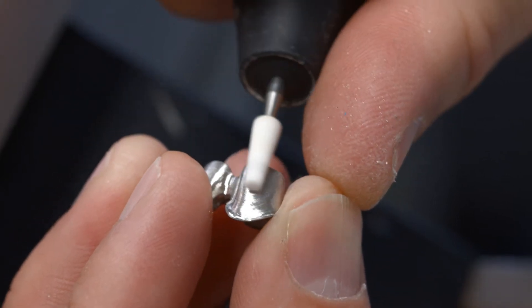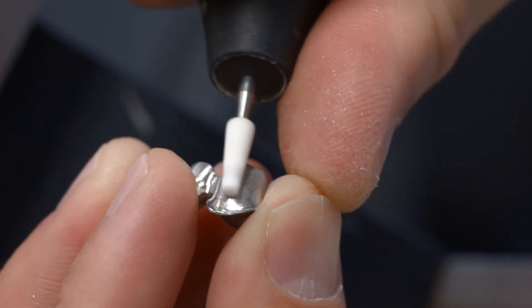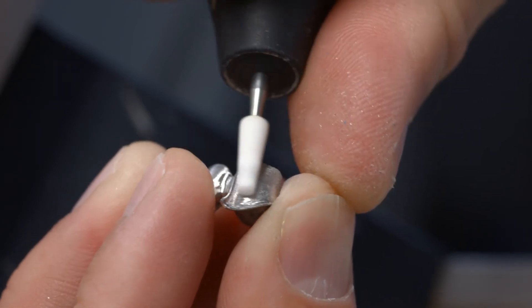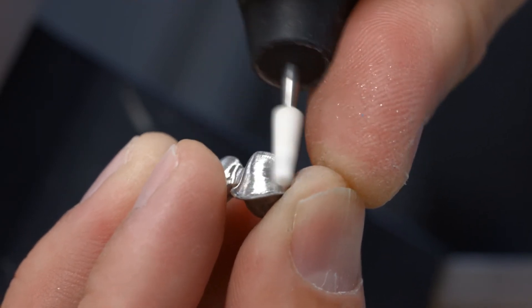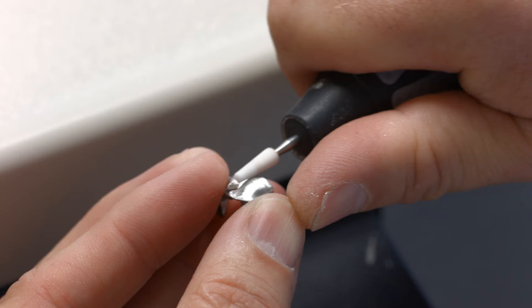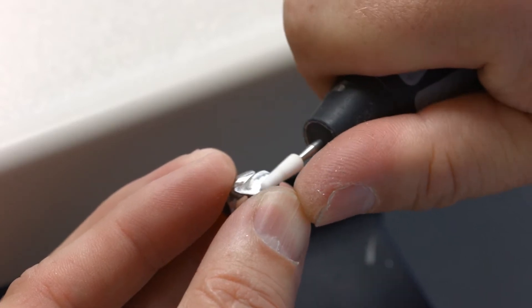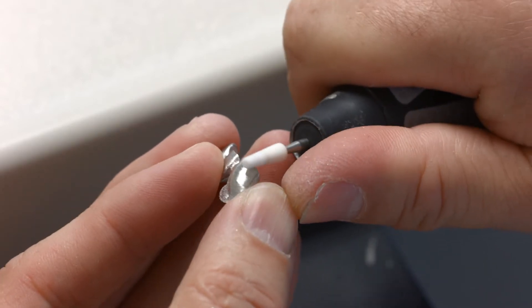Finish the metal framework with tungsten carbide burrs or ceramic bonded grinding instruments. Observe the instructions for use of the corresponding alloy. Work in one direction only to avoid overlapping and inclusions in the metal surface.